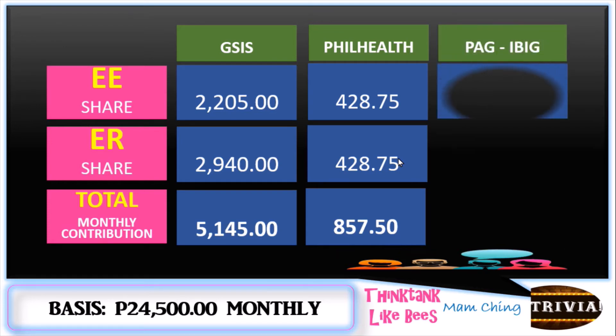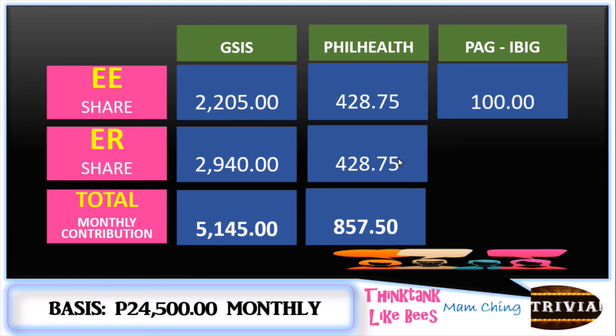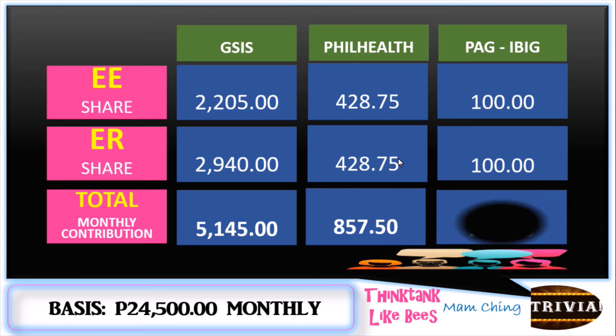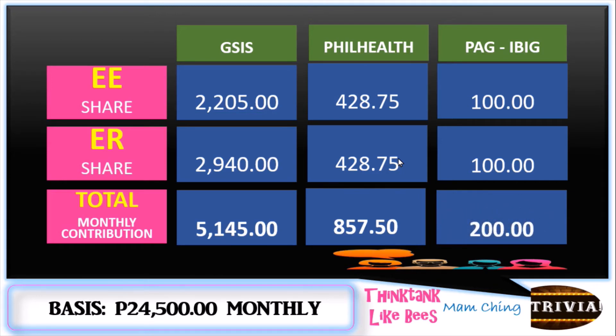For the ECC contribution, you need to share ₱100 pesos, and at the same time ₱100 pesos for the employer. So the total is ₱200 pesos for the ECC contribution.